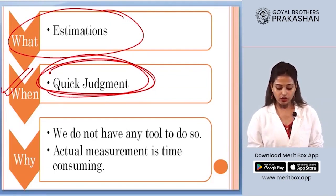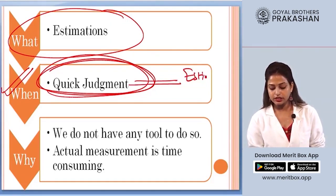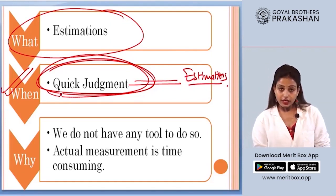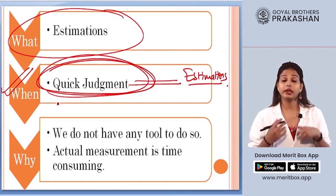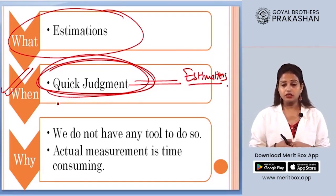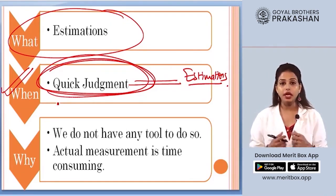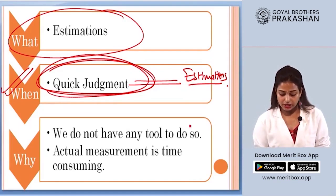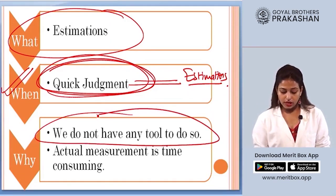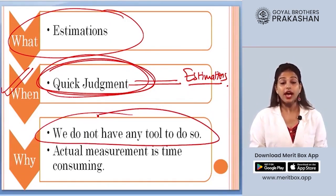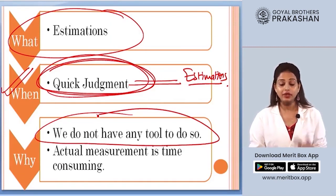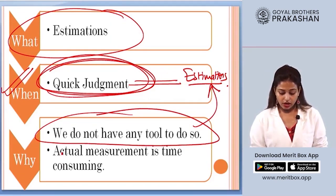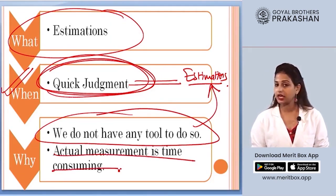The second case for making estimation is when you do not have any measuring tool. For example, if I ask you the length of a cloth and you don't have a measuring tape, you will estimate how long the cloth piece is. So when we do not have an appropriate tool, we again rely on estimation. Actual measurement is very time-consuming, which is why estimation helps us.